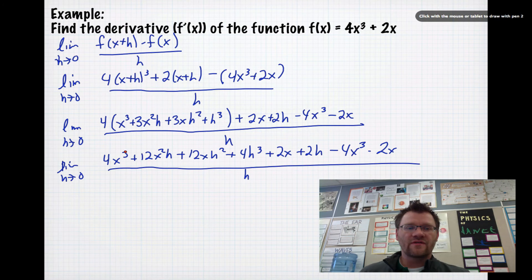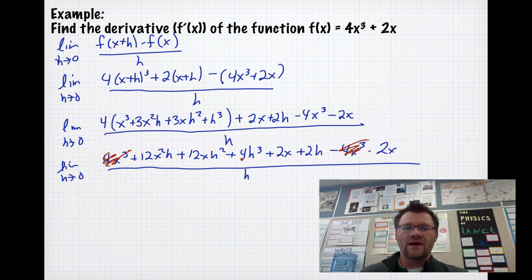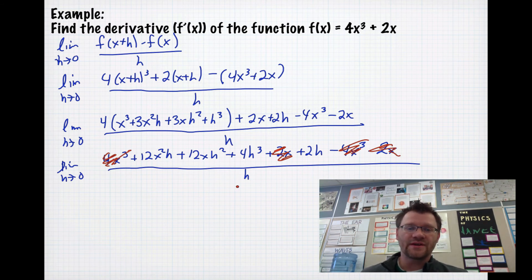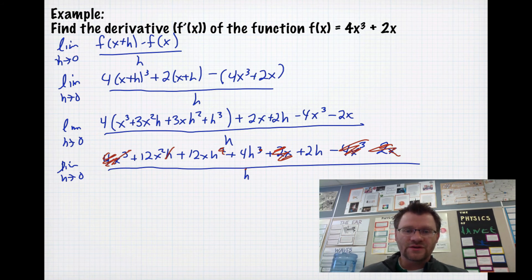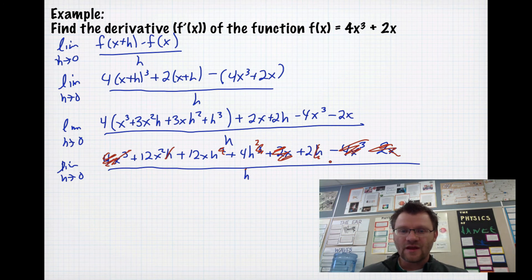We've got a 4x³ over here and a negative 4x³ there, so they cancel each other out entirely. We have a 2x and a negative 2x, and they cancel each other out entirely. What we're left with is a term, each of these terms each has an h in it. So with this h in the bottom, we can now cancel out one h in each of these terms. So that h, one of those h's, one of those h's which leaves us with h², and that h all cancel out with the h in the bottom.